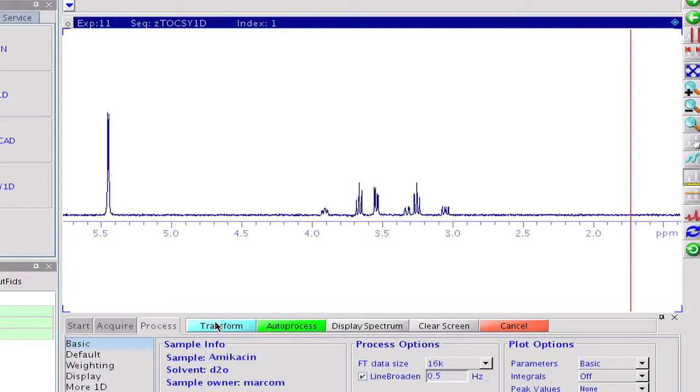The multiplets are undistorted and high resolution conditions are fully retained. Coupling constants are easy to extract and can be used to determine the relative configurations of the asymmetric carbon atoms in the sugar ring.